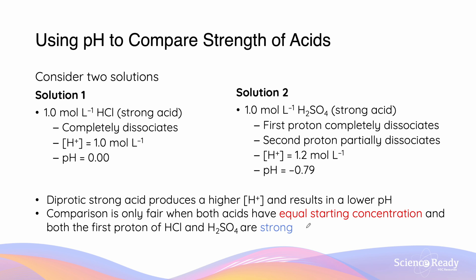Let's look at another example. We're comparing 1 M HCl with 1 M H₂SO₄, which is also a strong acid. The first proton completely dissociates, but the second proton is weak and only partially dissociates, which means the H⁺ concentration is a little greater than 1.0 — we'll say 1.2 moles per liter. Using our pH calculation, negative log of the H⁺ concentration, we get a pH of −0.79.